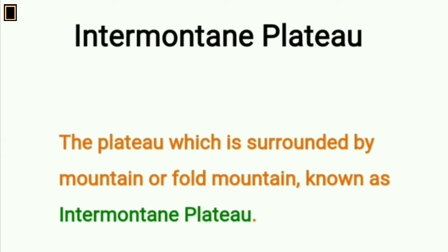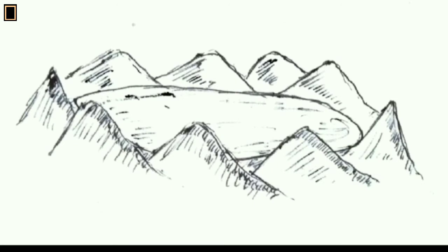Intermontane plateau: the plateau which is surrounded by mountains or fold mountains is known as an intermontane plateau. Intermontane plateaus are generally surrounded by mountains. During mountain-building movements, when fold mountains rise up due to horizontal pressure, the lands in between mountains or the median mass also lift up and form intermontane plateaus. Generally, anticlines form mountain ranges and synclines form valleys. But sometimes, synclines are formed with hard resistant rock and are also uplifted with the adjacent anticlines, forming such plateaus.